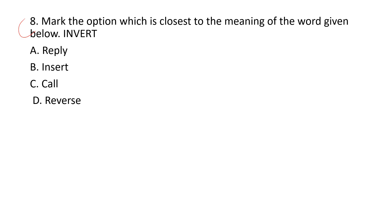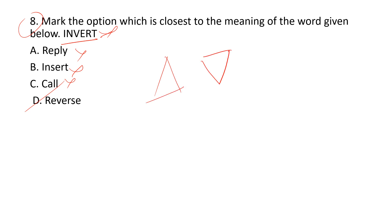The eighth question asks for the closest meaning — a synonym — for the word 'invert.' Options include reply, insert, call, and reverse. Invert means to flip or turn upside down — for example, an inverted triangle is a triangle turned upside down. So 'invert' means reverse. Reverse is the correct answer.